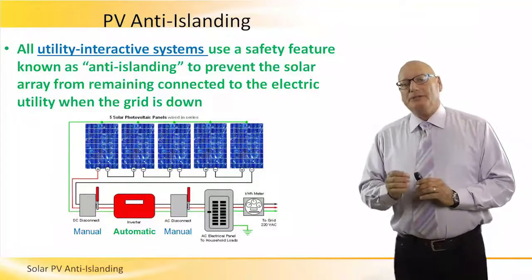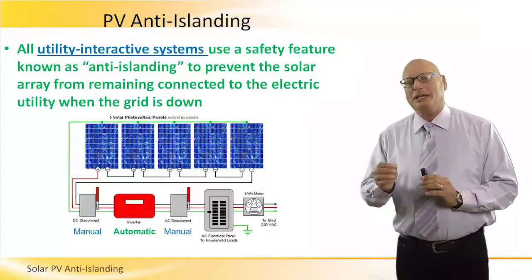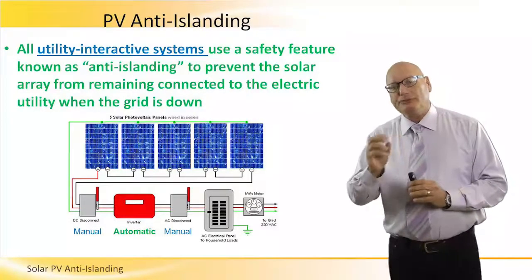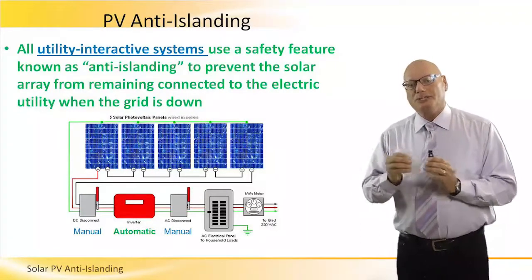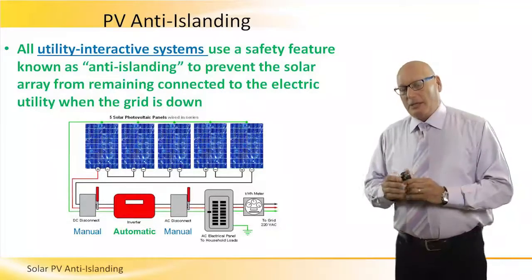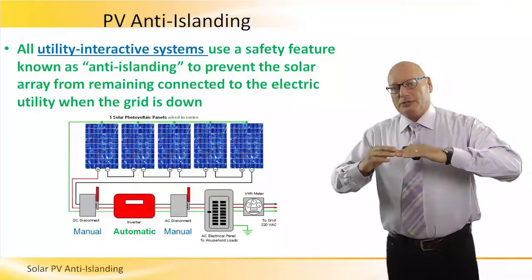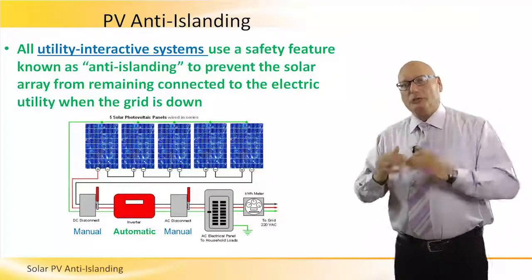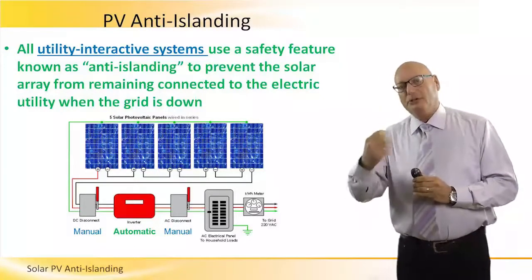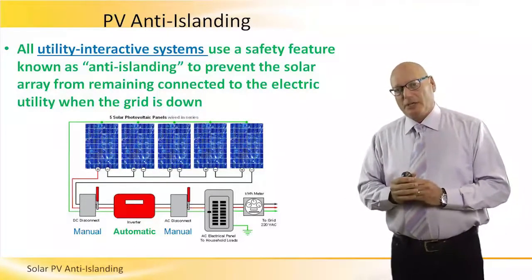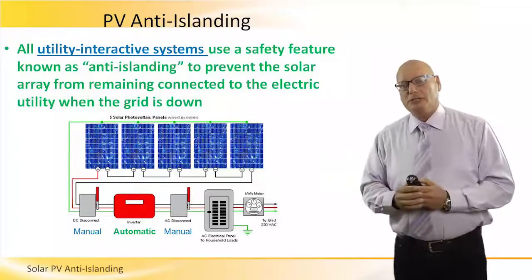All utility interactive systems use a safety feature known as anti-islanding. This is to prevent the solar array from remaining connected to the electric utility when the grid is down. Even when the grid is down, the sun continues to send solar energy which is being received by the panels, and the arrays continue to generate electrical energy.